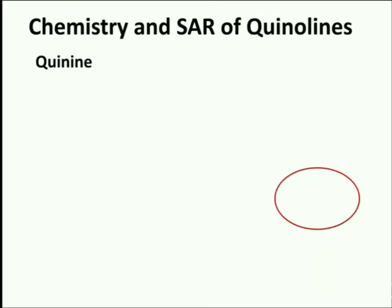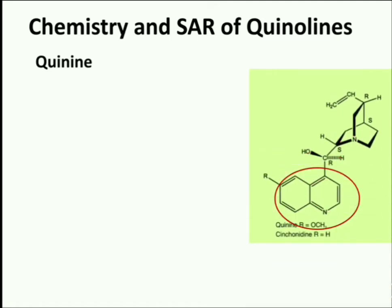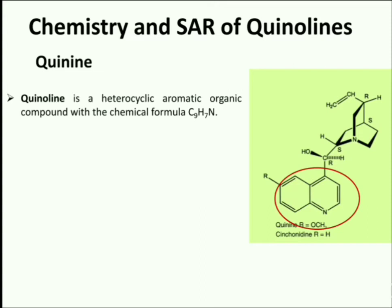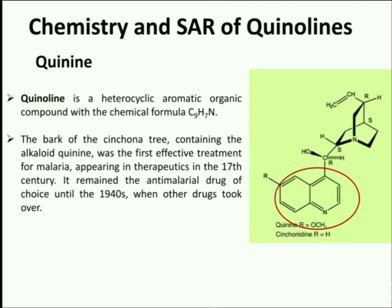Next topic is the chemistry and structure activity relationship of quinolines. Antimalarials such as 4-amino and 8-aminoquinolines contain quinoline as a basic skeleton. Quinoline is a heterocyclic aromatic organic compound with the chemical formula C9H7N. It is a bicyclic ring system containing one benzene ring fused with a pyridine ring system. The bark of the cinchona tree containing the alkaloid quinine was the first effective treatment for malaria, used in the 17th century.